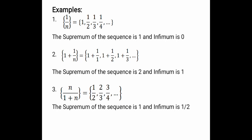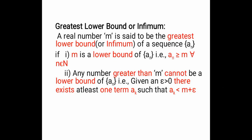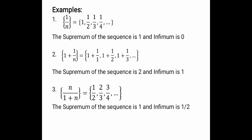So to recap: a real number m is said to be the least upper bound or supremum of a sequence if m is the upper bound of that sequence and any number less than m cannot be the upper bound. A real number m is said to be the greatest lower bound or infimum of a sequence if m is the lower bound and any number greater than m cannot be the lower bound. We shall discuss more examples in the next session. Thank you.